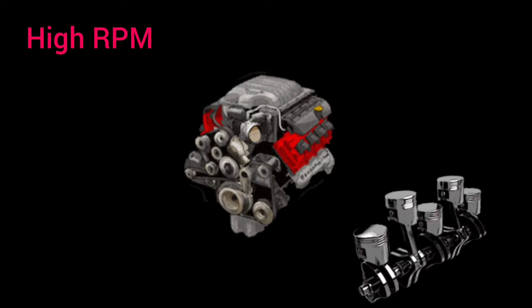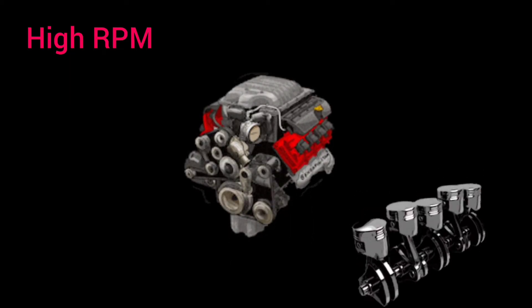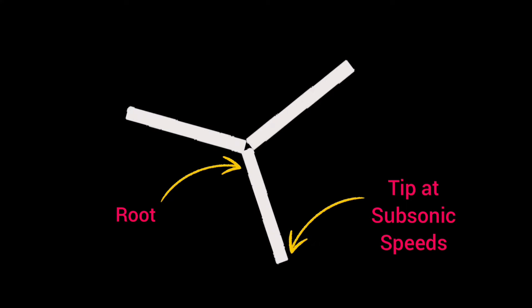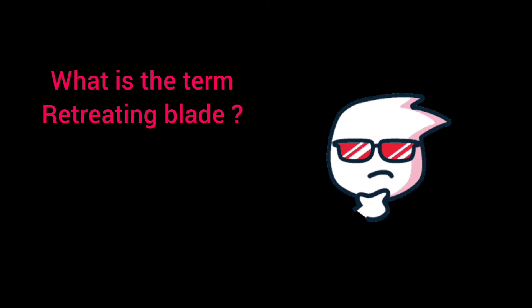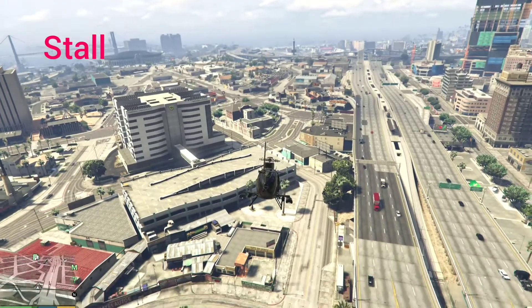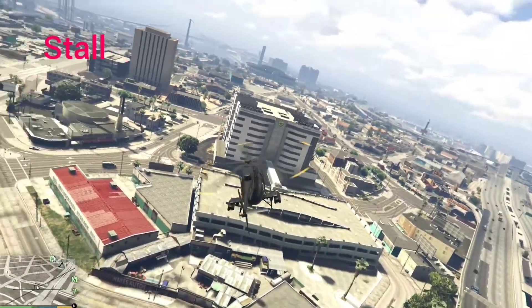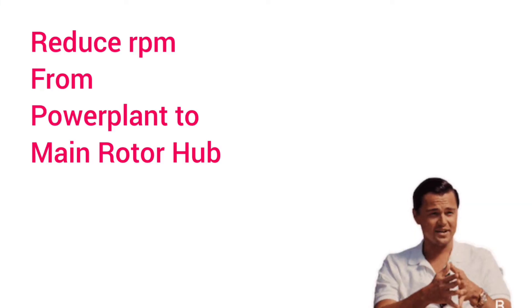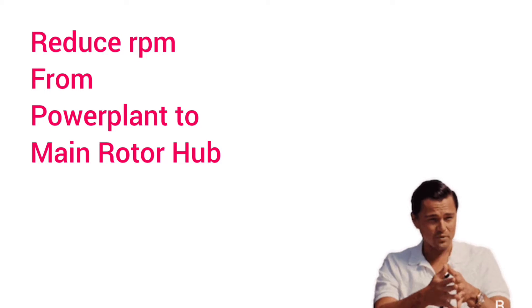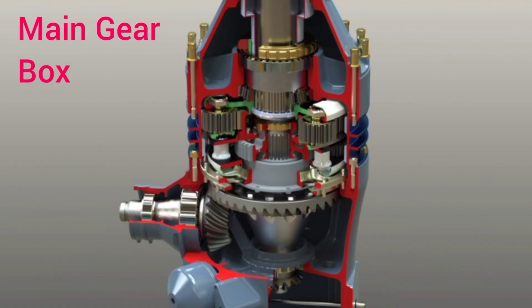The engine produces very high RPM, which the rotor blades cannot match, because the tip speed must stay subsonic — if not, the retreating blade causes stalling. If a person is standing in front of the helicopter, the blade coming towards him is the advancing blade and the blade moving away from him is the retreating blade. Stalling is the condition where the helicopter cannot maintain lift. So we need to reduce the RPM from the power plant to the main rotor hub, and for that we use the main gearbox.